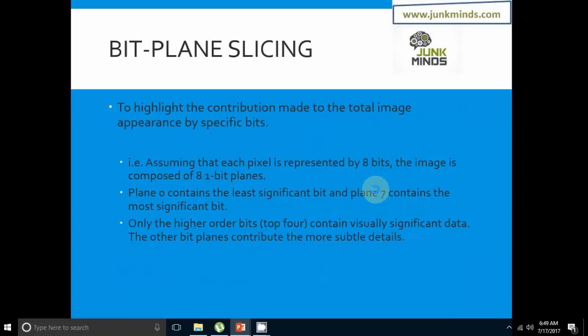Bit plane slicing is used to highlight the contribution made to total image appearance by specific bits. Each pixel is represented by 8 bits, so the image is composed of 8 one-bit planes, where plane 0 contains the least significant bit and plane 7 contains the most significant bit.